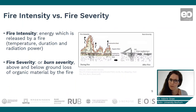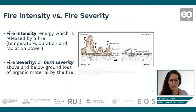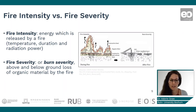There is a difference between fire intensity and fire severity. Looking at the figure, on the left side we see fire intensity, which is measured during a fire, and on the right side burn severity, which is assessed after the fire. Fire intensity shows the energy released by a fire — for example the temperature, duration, and radiation power. After a fire, we can monitor what we call fire severity or burn severity, which is about the above and below ground loss of organic matter caused by the fire.